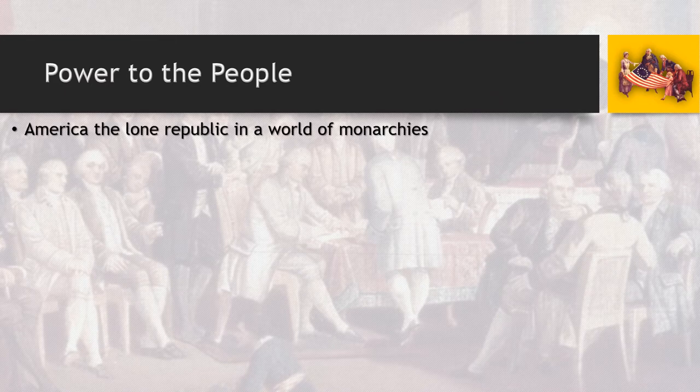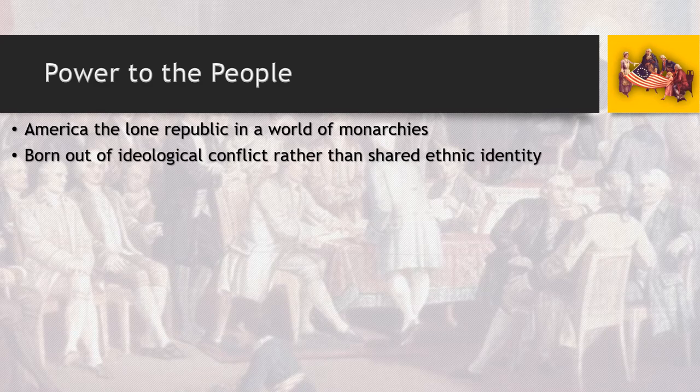Bear in mind, at this point in time, America is really the only constitutional democracy that exists anywhere in the world, and it's a republic. A constitution doesn't even exist yet. So this is a government that really exists without precedent. Before now, all the other countries in the world have been operating as monarchies, with rulers who either rule by the rights of parliament or, in some cases, by what they consider to be divine authority.